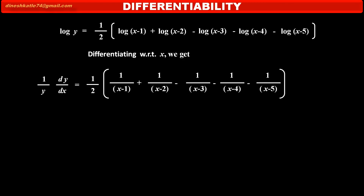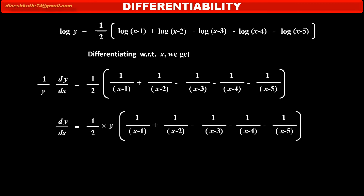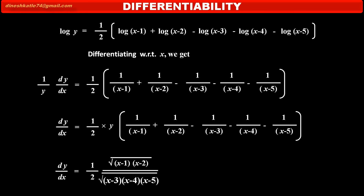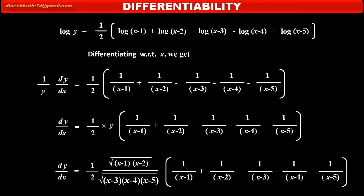Therefore, shifting y from 1 upon y to the right hand side, we get: dy by dx is equal to (1/2) into y into the whole bracket. Substituting the value of y on the right hand side, dy by dx equals half into square root of [(x minus 1)(x minus 2) upon (x minus 3)(x minus 4)(x minus 5)] into the whole bracket. This is the derivative of the given function.